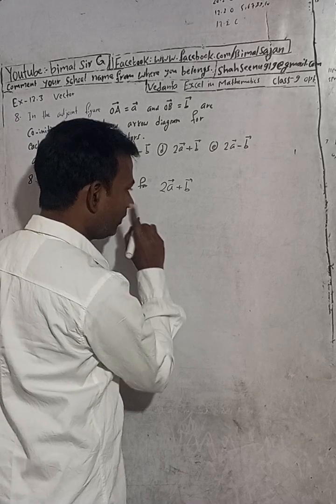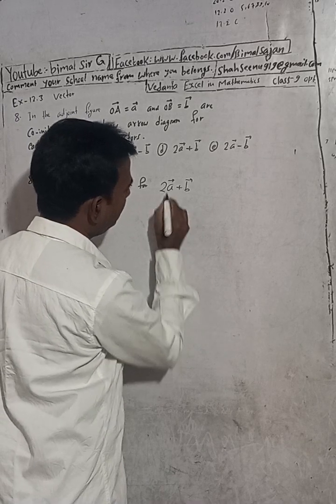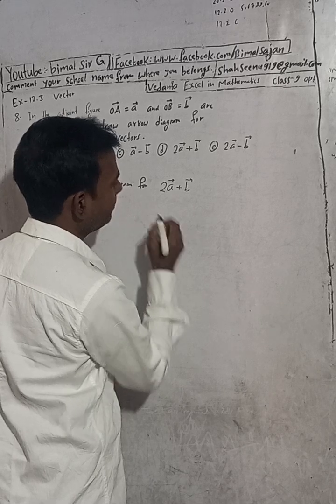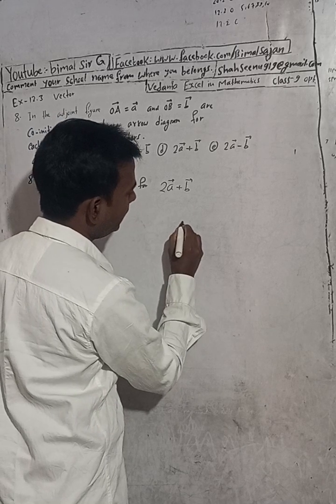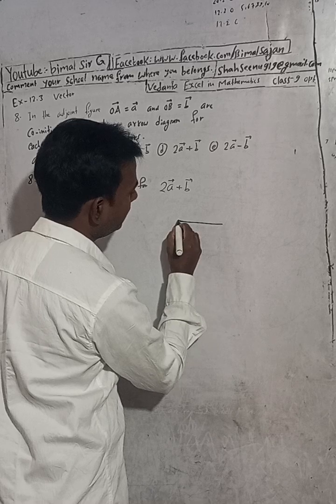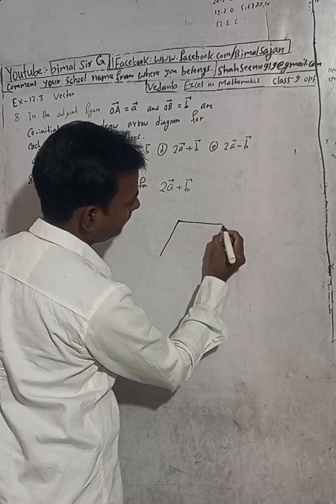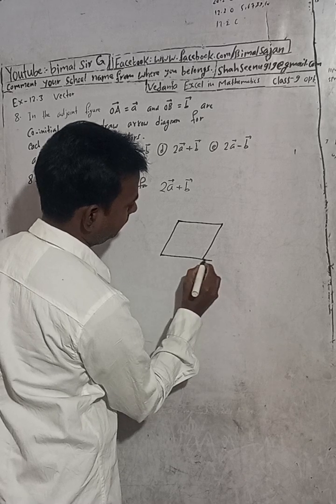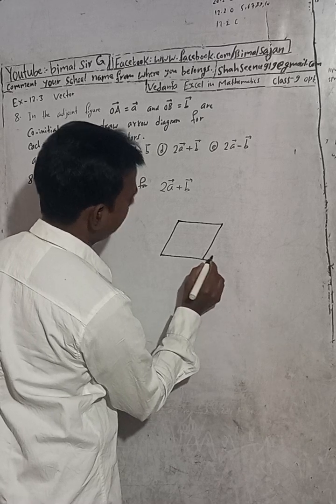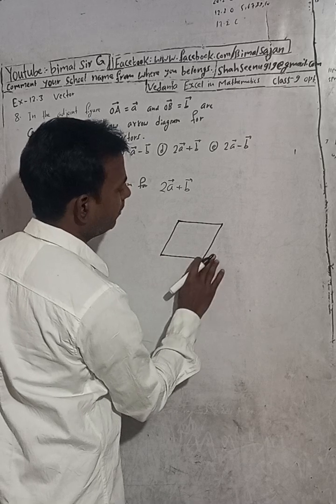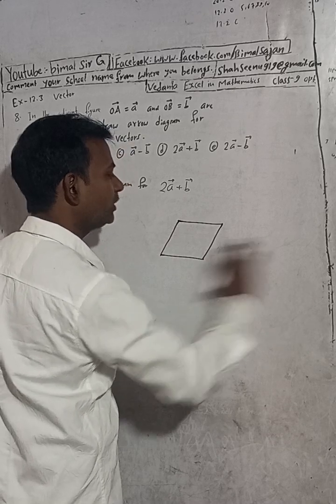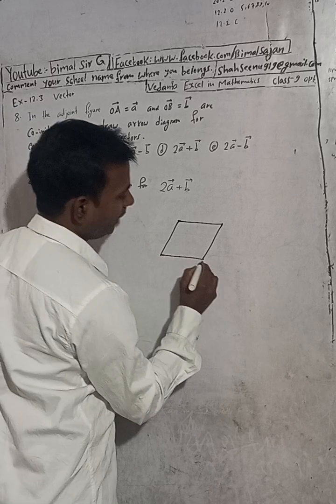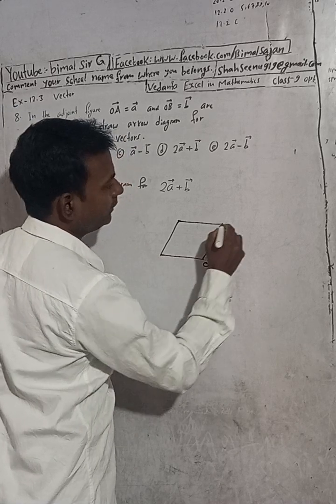Now to do this, we have to draw a parallelogram. Both vectors are positive, so no need to extend. This is our origin O. This is 2A, and this is B. This is OB, which is B vector.